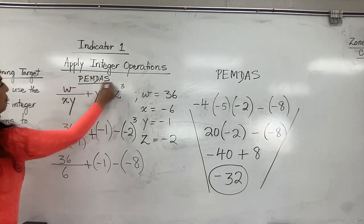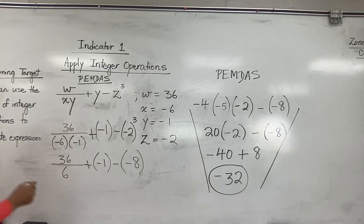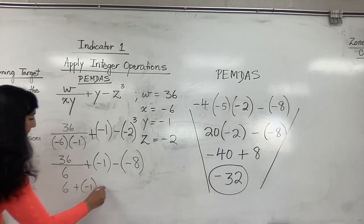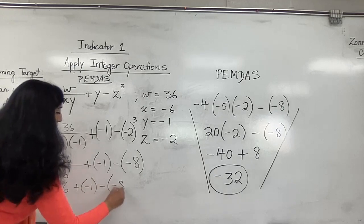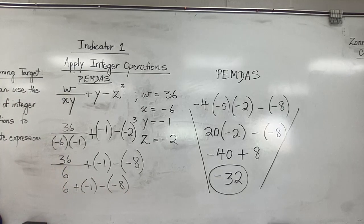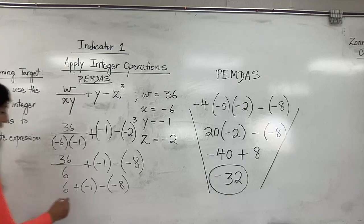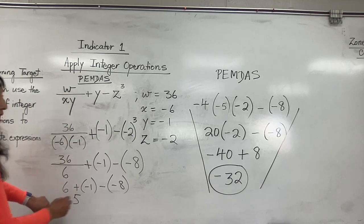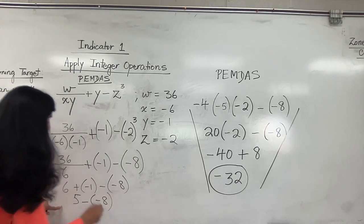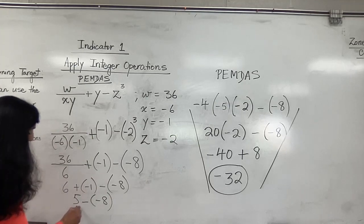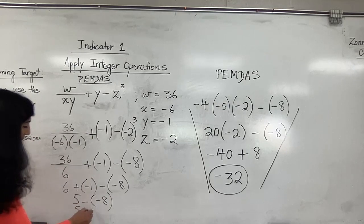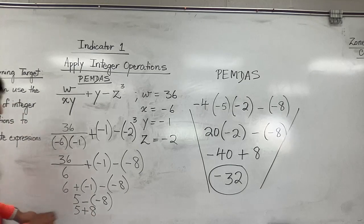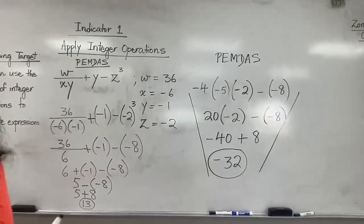Division comes first: 36 divided by 6 gives 6, so I have 6 plus negative 1 minus negative 8. Now 6 and negative 1 are opposite signs, so I subtract and keep the sign of the bigger integer: 6 minus 1 is 5, positive. Then 5 minus negative 8 — change to 5 plus 8 — which gives me 13. That is my final answer.